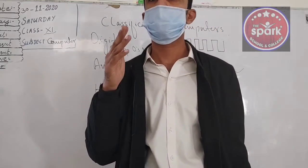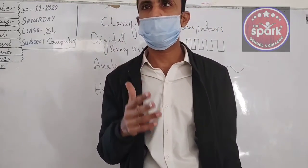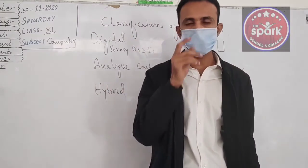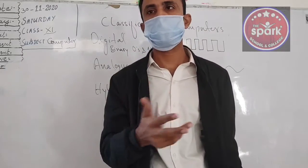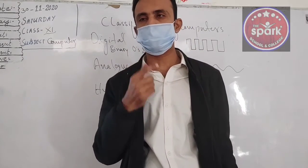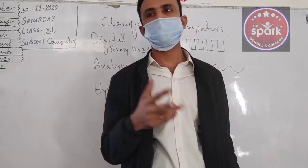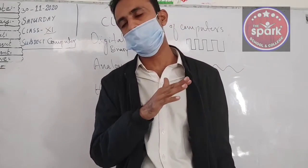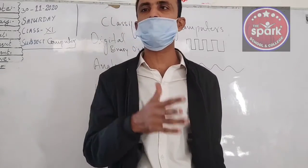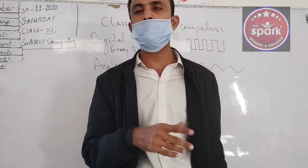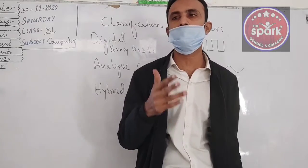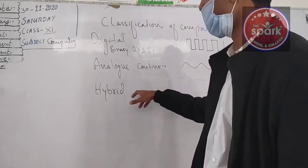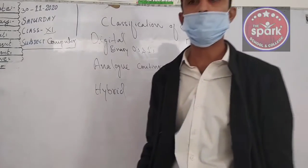We need to use analog computers for such quantities. For example, not only petrol but also temperature — the temperature which comes through sunlight always changes and does not remain the same. To complete such types of calculations, we need to use analog computers.